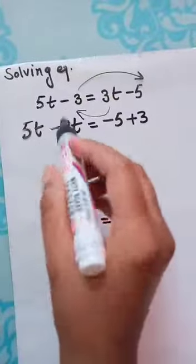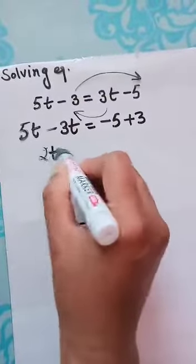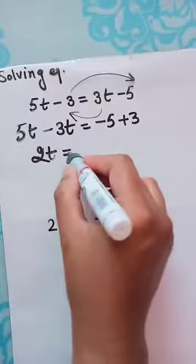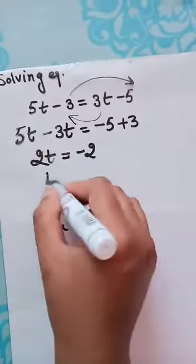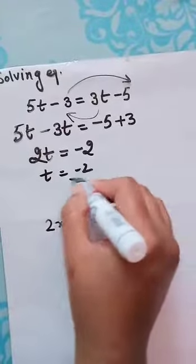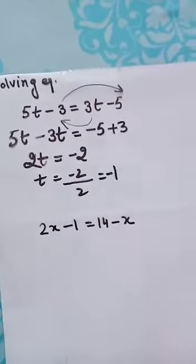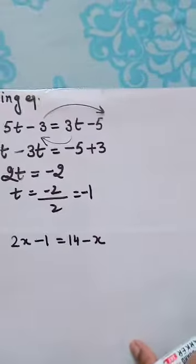Now, this is quite simple. 5t minus 3t, that becomes 2t. And that will be equal to minus 2. So, t will be equal to minus 2 divided by 2. That is equal to minus 1.